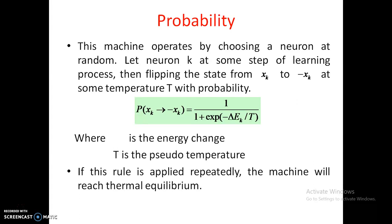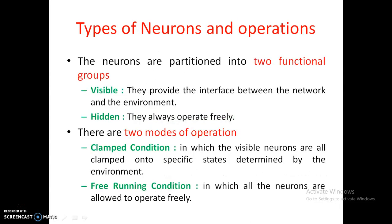The probability of flipping from x_k to minus x_k is: 1 divided by (1 plus exponential of minus delta_Ek divided by capital T), where delta_Ek is the energy change and capital T is the pseudo temperature. If this rule is applied repeatedly, the machine will reach thermal equilibrium and we can obtain the minimum of the energy function.